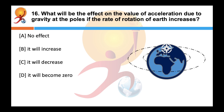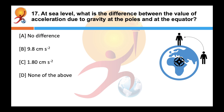What will be the effect on acceleration due to gravity at the poles if the rate of rotation of the earth increases? Answer is A: there will be no effect. If the rate of rotation of the earth increases, the value of acceleration due to gravity decreases at all places on the surface of the earth except at the poles. At sea level, the difference between the value of acceleration due to gravity at the poles and the equator is 1.8 cm per second square.